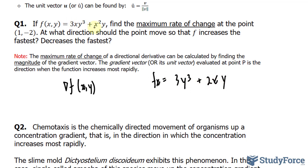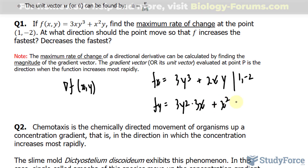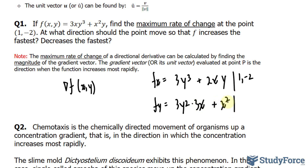I used the power rule for both situations. We'll evaluate this soon at (1, -2). The partial derivative of the function with respect to y: starting with the first term, we have 9xy², keeping 3x constant, plus x². We'll evaluate this at (1, -2) as well.